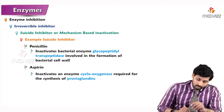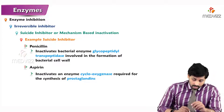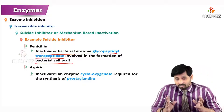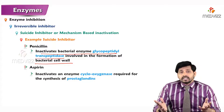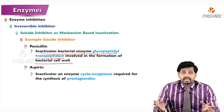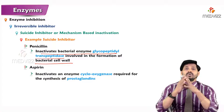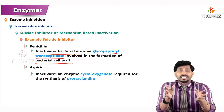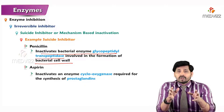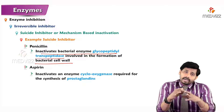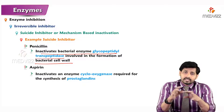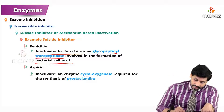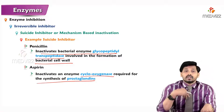An example of a suicide inhibitor is penicillin, an antibiotic we are all aware of. Penicillin inactivates the bacterial enzyme glycopeptidyl transpeptidase, which is involved in the formation of the bacterial cell wall. If there is no cell wall, the contents inside the cell leak out, resulting in cell death or cell lysis.